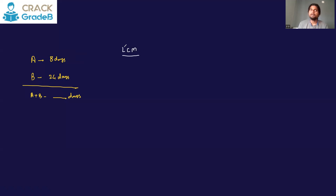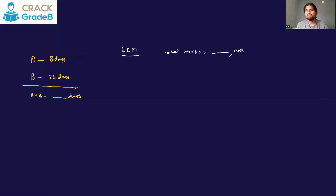We solved these questions first directly by the formula — you can refer to the Time and Work video — and secondly with the LCM method. In the LCM method, we consider the total work as a certain number of units, breaking the work into parts. We take that figure as a common multiple of 8 and 24.